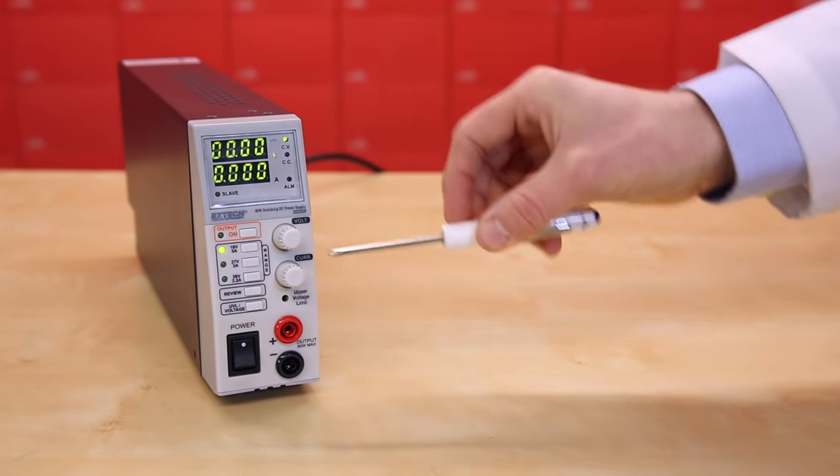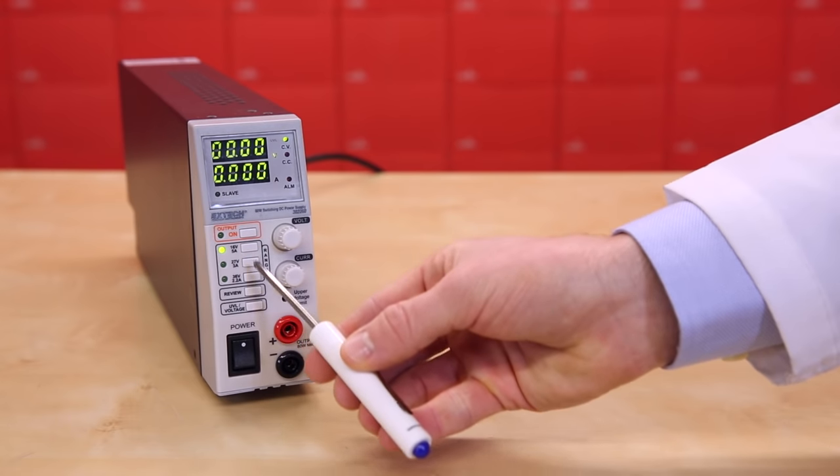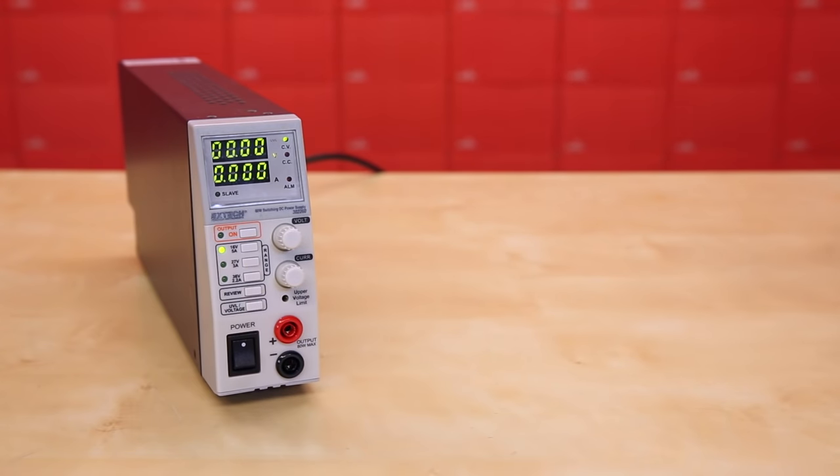Some will have knobs and others will have buttons that are used to set the voltage and current limits. This unit also has some buttons that allow us to turn the output on and off, adjust the voltage and current ranges, and review our settings.